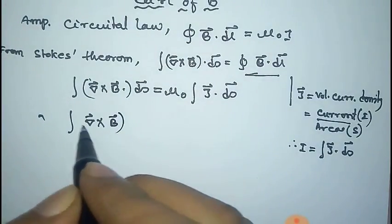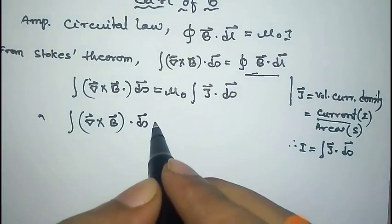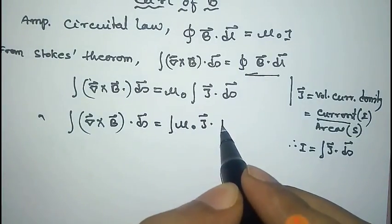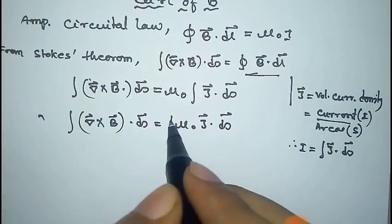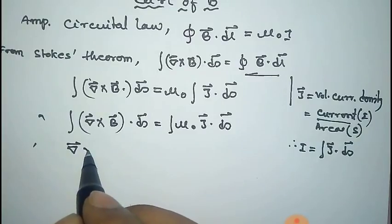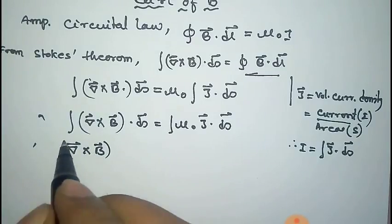Now ∮(∇×B)·ds equals, and we can take μ₀ into the integral because it is a constant. Now we remove the integral from both sides.